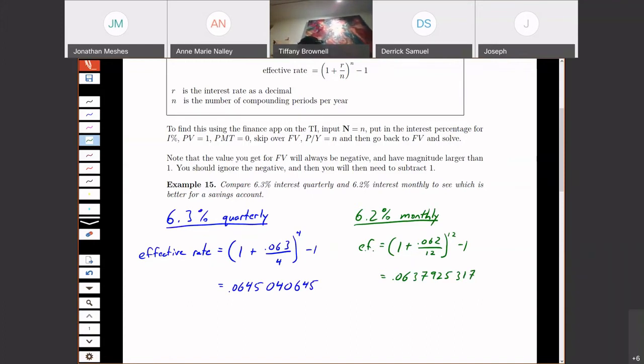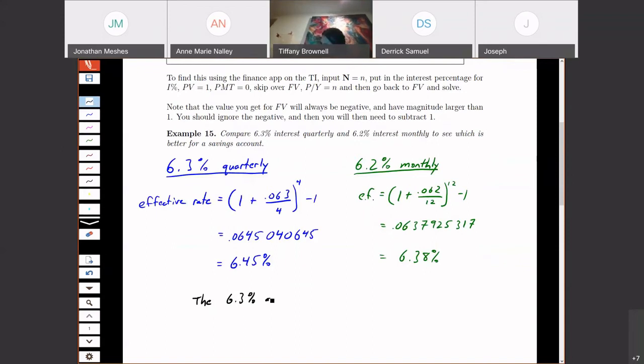So if I look at these here, the 6.3% quarterly is going to be approximately the same as a 6.45% simple interest. So here my effective rate is 6.45% if I round to a couple decimal places. Over here, it's going to be 6.38% if I round to a couple decimal places. So I can see that the 6.3% quarterly wins out by a tiny bit. So that's how we can make comparisons is by doing this effective rate business.